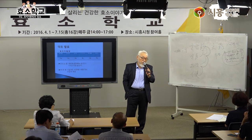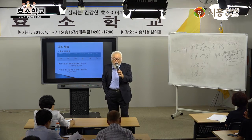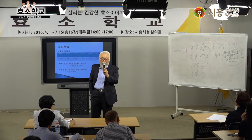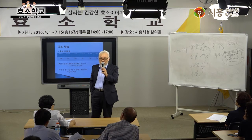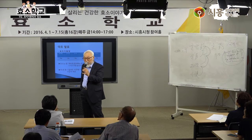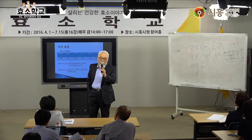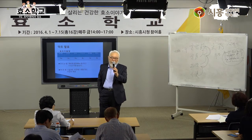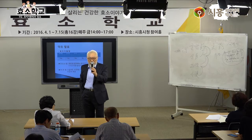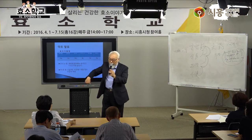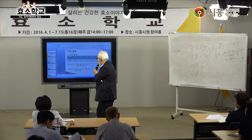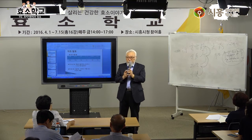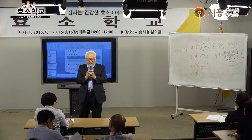정유성이 있는 약재는 먼저 끓이면 약성이 약해집니다. 그래서 먼저 끓이고 중간에 육미지황탕을 넣고, 나중에 향이 날아가는 것들을 넣습니다. 녹용이나 인삼은 별도 그릇에 물을 두 배 넣고 빡빡 끓여서 굳힌 다음 냉동실에 넣어 필요할 때 꺼내 쓰세요.